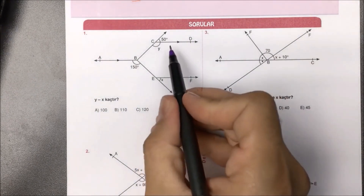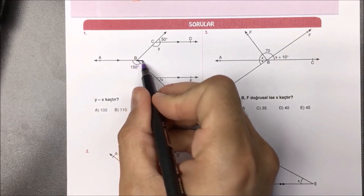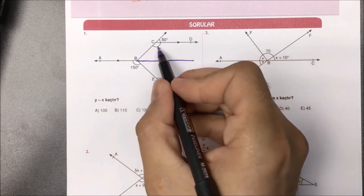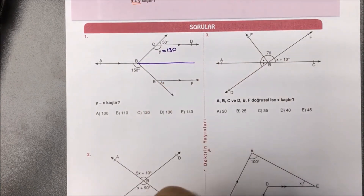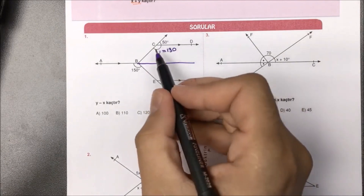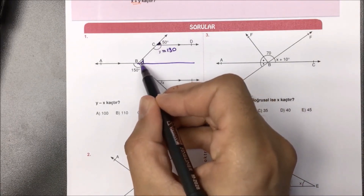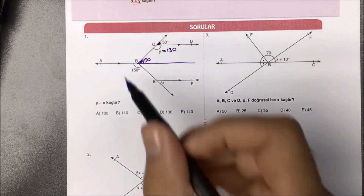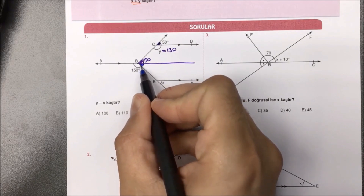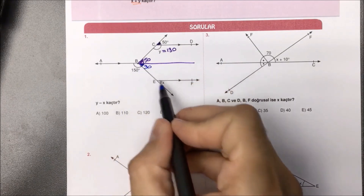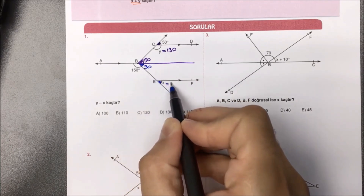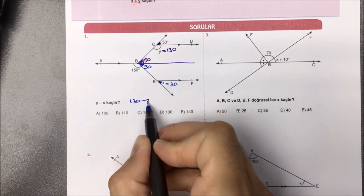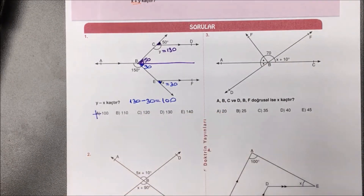Birinci sorumuza bakacak olursak verilen paralelliklere göre Y ve X kaçtır diye sorulmuş. Bu çizgiyi dümdüz uzatırsak öncelikli olarak Y'yi doğru açı kuralından bulabiliriz: 180'den 50'yi çıkartırsak Y'yi 130 olarak bulmuş oluruz. Sonrasında yöndeş açıdan 50'yi buraya taşıyabiliriz. Burada bir doğru açıyı kullanıp 180'den 150 çıkartacak olursak 30 derece kalacak. 30 ile X'in olduğu yöndeş açı işimize yaramış oldu. Y dediğim değer 130, X dediğim değer 30; aradığımız yanıt 100 olarak bulunmuş olur.